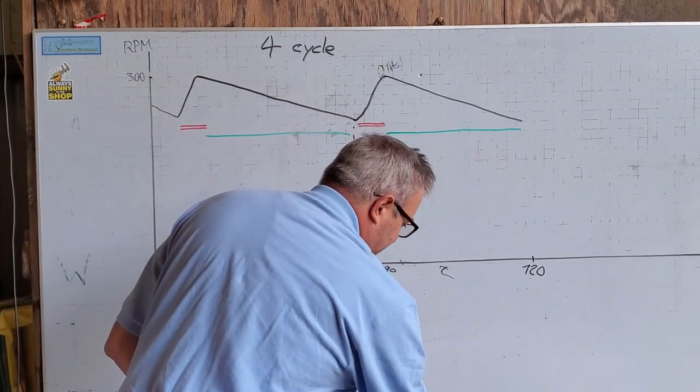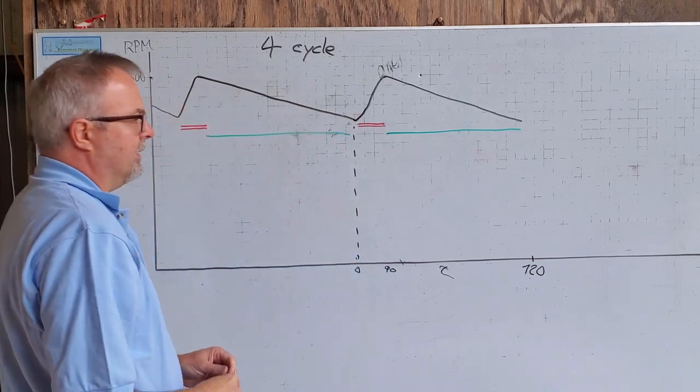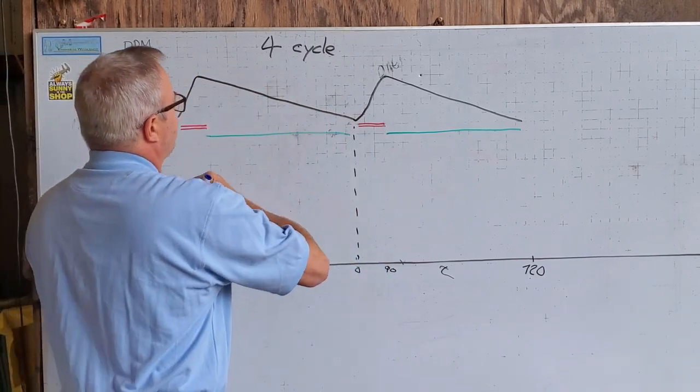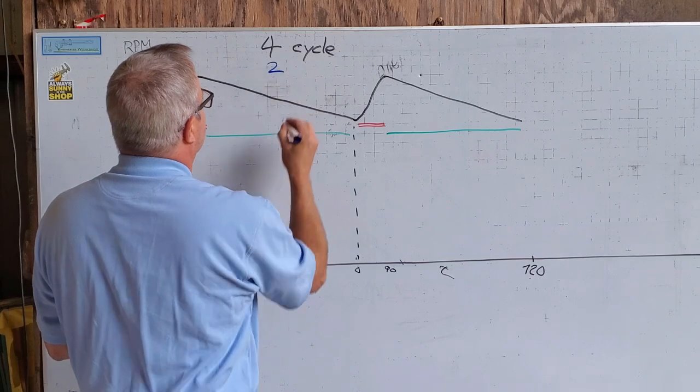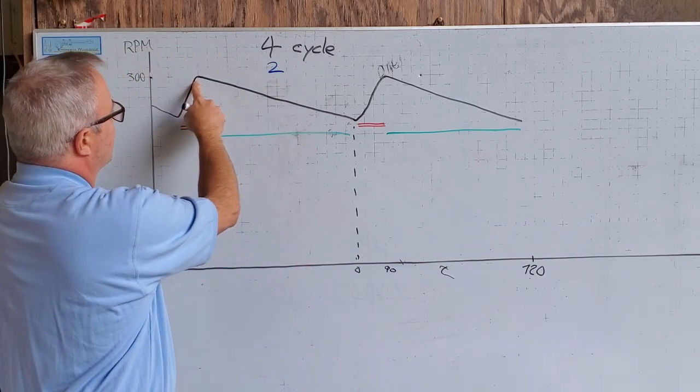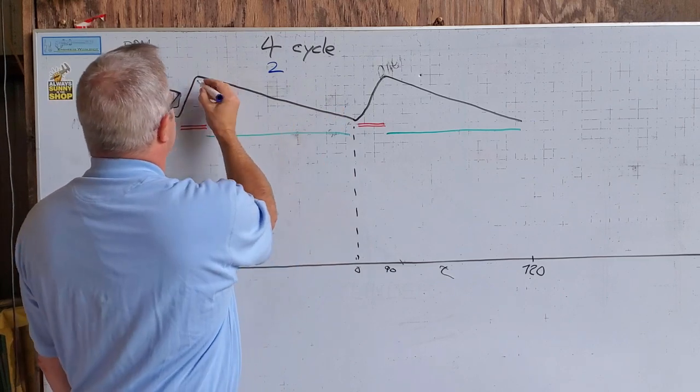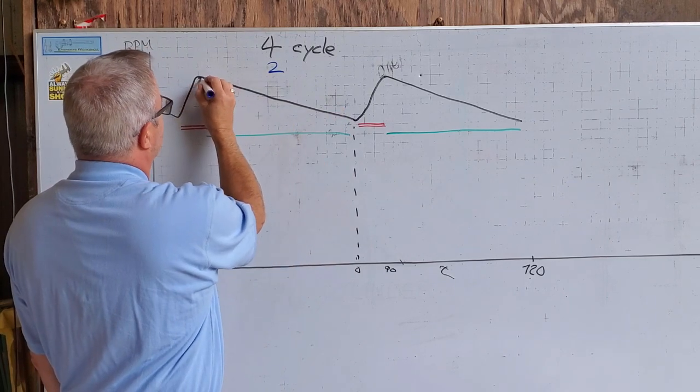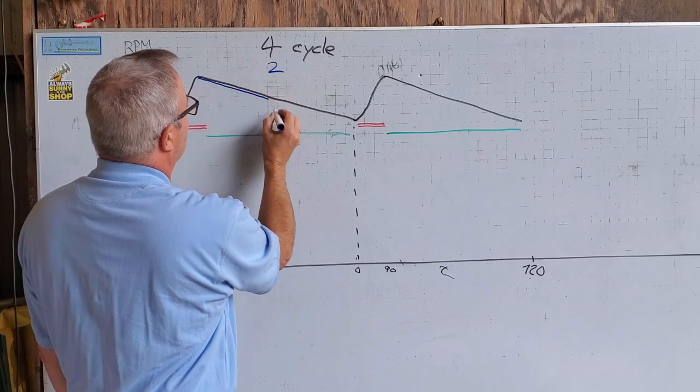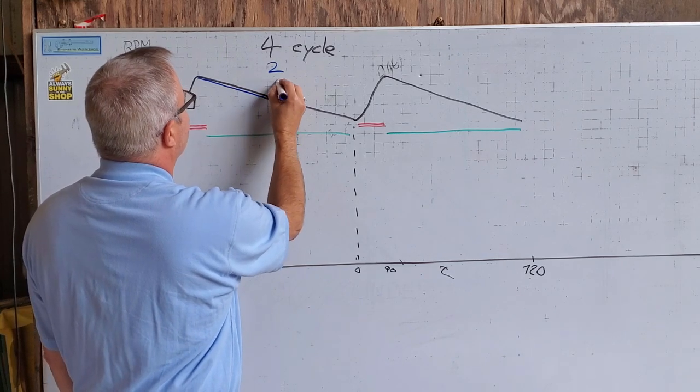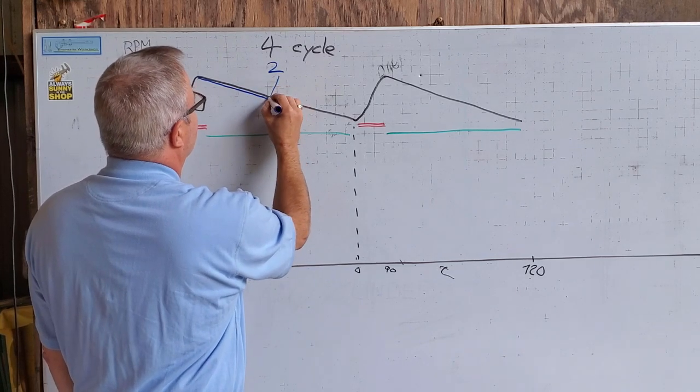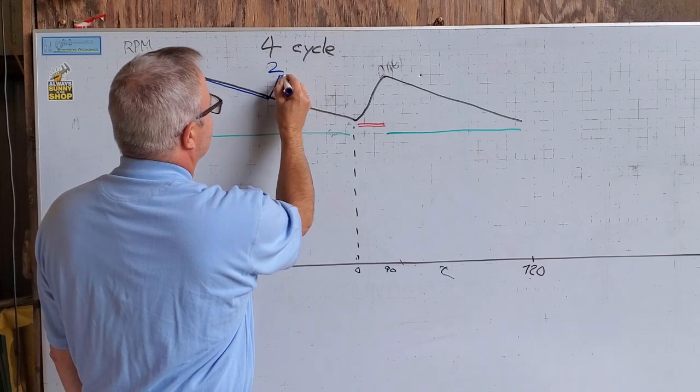Now let's keep the same kind of engine, except let's go to a two-cycle. Two-cycle has admission of power twice as often as a four-cycle, so the two-cycle waveform is going to follow this, but at the halfway point we're going to admit energy and that flywheel speed is going to come back up, and then it's going to ramp down.